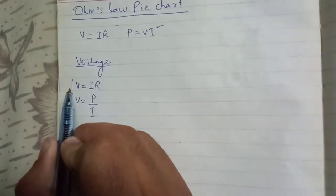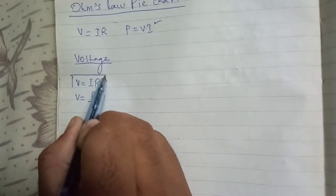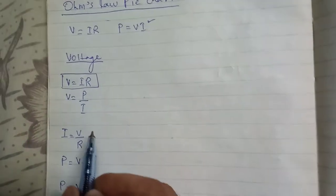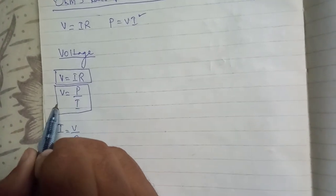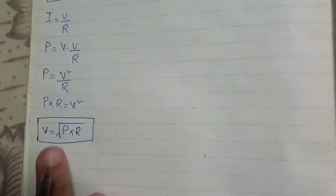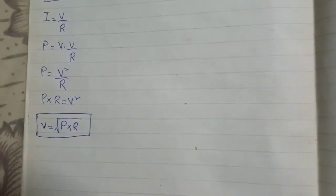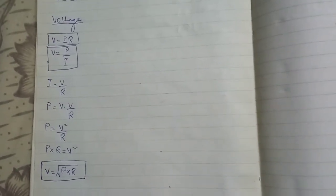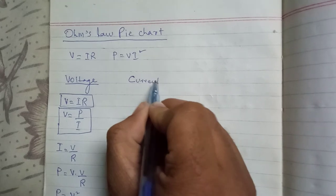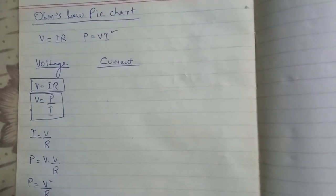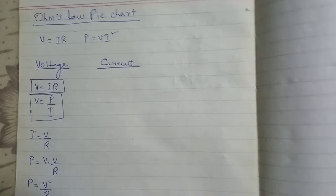So we made three formulas for voltage: the first is V is equal to IR, the second is V is equal to P upon I, and the third is V is equal to the square root of P multiplied by R. Now we will make three formulas for current.